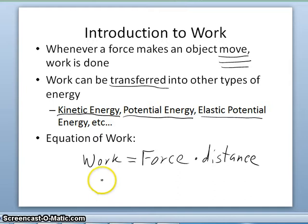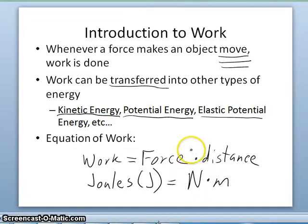We measure work in units of joules, which is shown as capital J. A joule is equal to a newton meter. So if we have force times distance, that's how we get a joule, which is a newton meter.